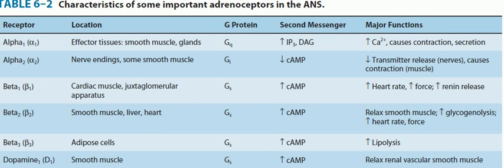The adrenoreceptors are divided into two types: alpha adrenoreceptors and beta adrenoreceptors. These alpha and beta adrenoreceptors have subgroups. In alpha, we have alpha 1 and alpha 2. In beta, we have beta 1, beta 2, and beta 3. There is also an additional one called dopamine D1, which uses dopamine as its neurotransmitter.